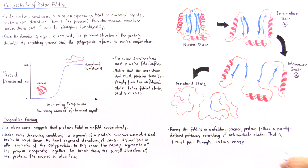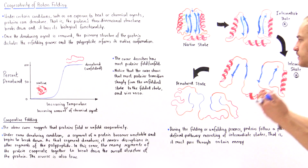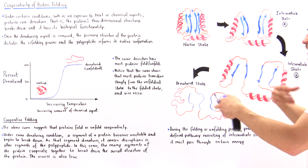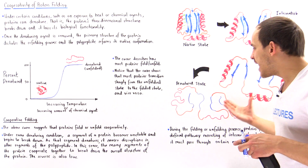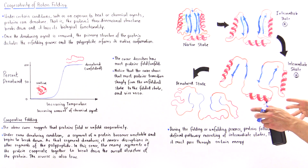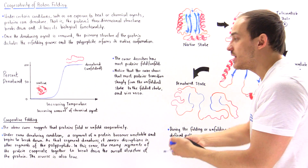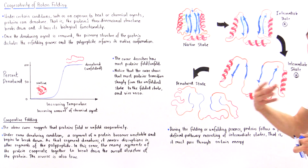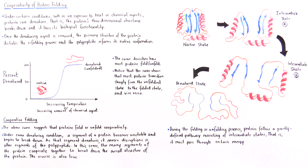Eventually, as we continue increasing temperature, the hydrogen bonds holding all these secondary structures also break, and those secondary structures denature until we form a single long polypeptide in its linear state — only the primary structure remains. Notice that as we go from the native state to the denatured state, these interactions take place cooperatively, and we pass through these intermediate states. During folding or unfolding, proteins follow a partly defined pathway that consists of these intermediate structures.